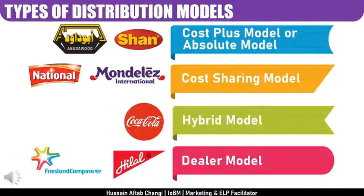We have explored midsize distributors and sole distributors. Some companies prefer one single distributor — for example, in Pakistan, Surf is handled by IBL (International Brands Limited), who also distributes Pringles, Ferrero Rocher, Kellogg's, and for P&G (Procter & Gamble) the sole distributor is Abu Daud Trading Company. Others prefer midsize distributors per territory: Engro Foods has four to five distributors in Karachi, Unilever has over 30–35 in Karachi, and National Foods has 9–10 in Karachi plus a dedicated modern trade distributor.